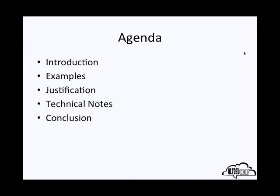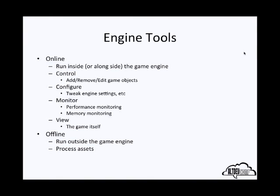I've classified engine tools into two larger categories. The first category is online tools — tools that run inside or alongside the game engine. Some examples are modifying the state of the game engine, controlling the game, configuring it, monitoring performance, or viewing the game itself. The other class of tools are offline tools, which run outside of or disconnected from the game engine — typically things that process assets. My talk is focusing on online tools, but the ideas I'm presenting are applicable to offline tools.